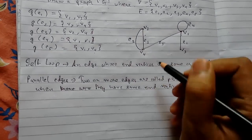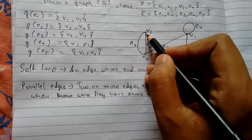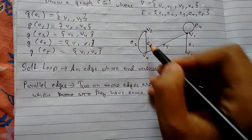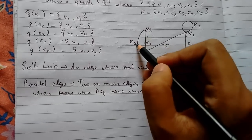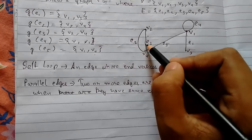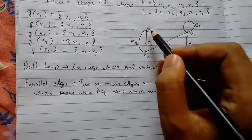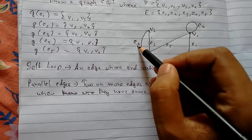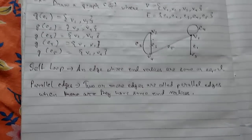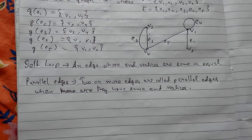What we mean here is that for the edges e2 and e3, these two are parallel edges because both edges have the same end vertices. For edge e3, v2 and v4 are the end vertices, and for edge e2, v2 and v4 are the end vertices. So these are parallel edges.